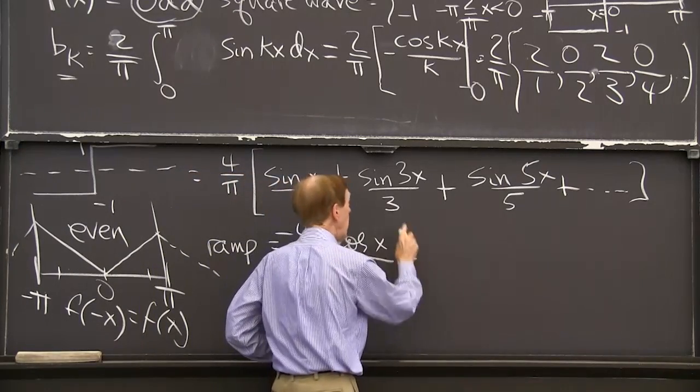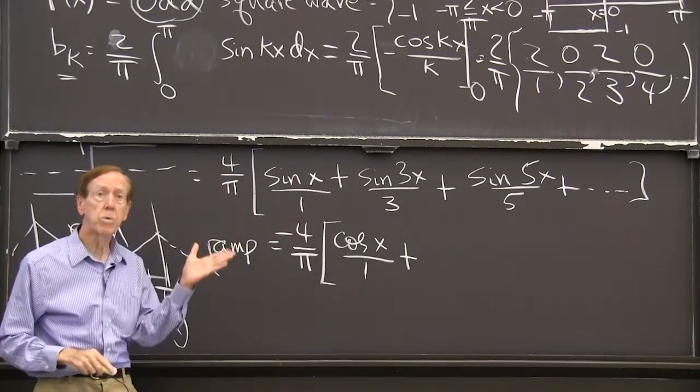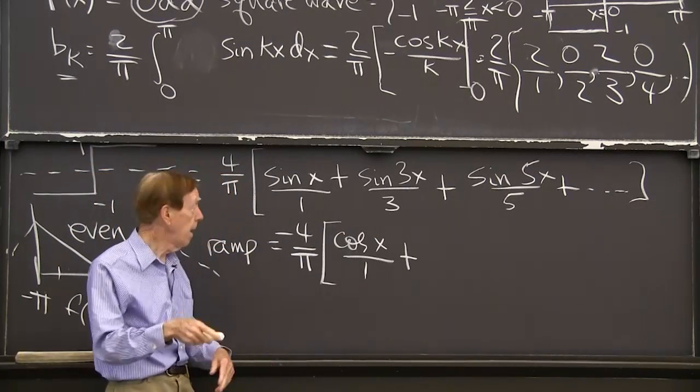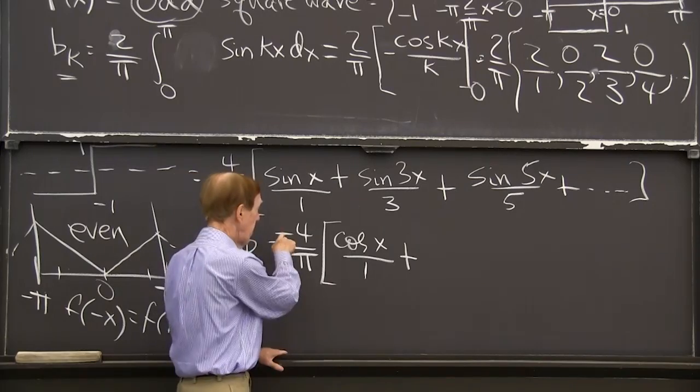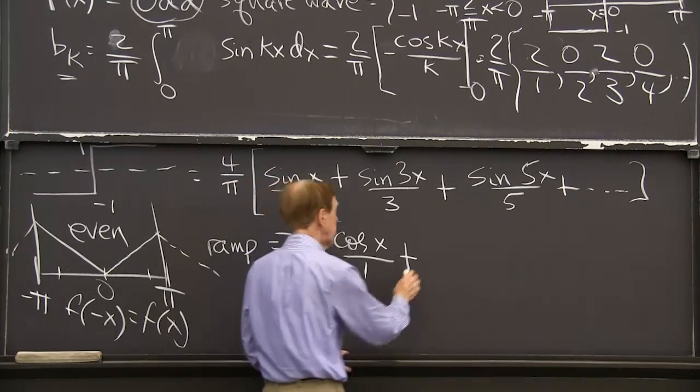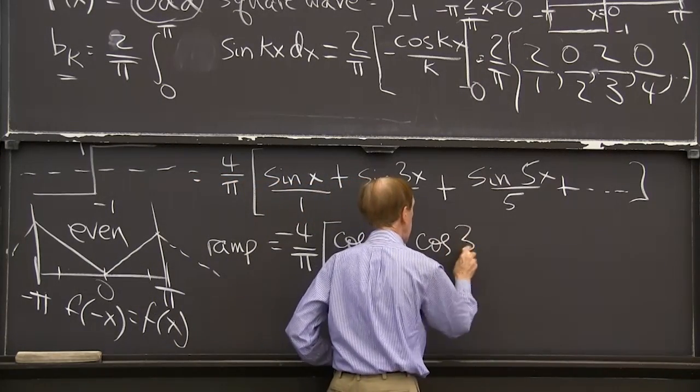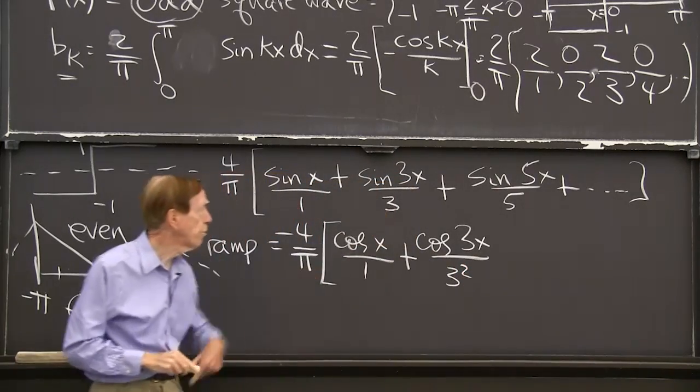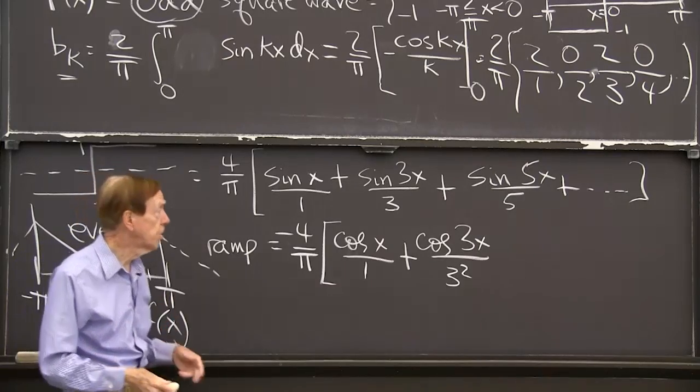Now what's the integral of this? The integral of sine 3x is a cosine 3x over 3. And there's another 3, and there's a minus sign, which I've got. So I think it's cosine of 3x over 3 squared. Because I have one 3 there, and I get another 3 from the integration.